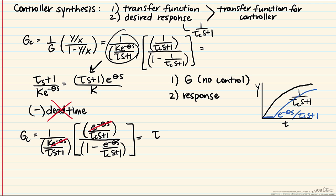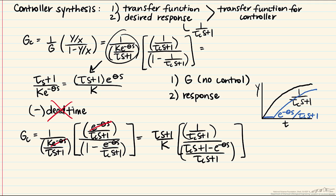After cancellation, inverting the first term gives (τs+1)/k. Keeping 1/(τc·s+1) in the denominator and finding a least common denominator for the second term yields another cancellation with τc·s+1. However, there is still an e^(-θs) remaining in the controller transfer function, and PID controllers do not have tuning parameters with exponentials, so we will need to use some approximation.